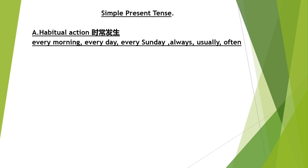We also have words like always, usually, often — all three mean 'regularly' or 'frequently'. So whenever we want to write or speak a sentence about habitual action, you will have to follow the rules: write the subject followed by the verb.